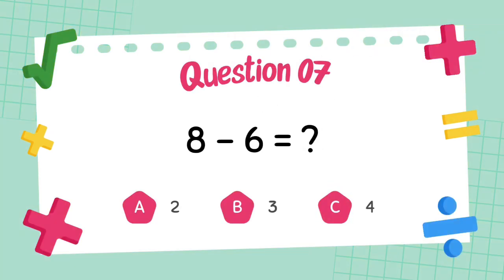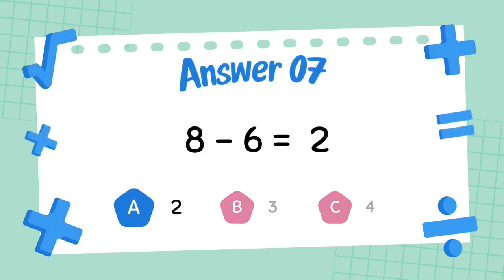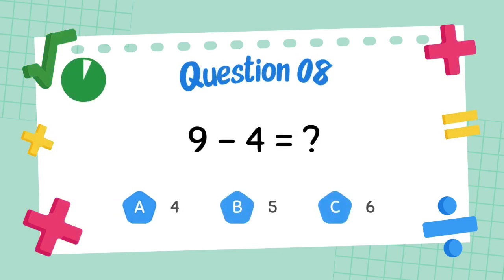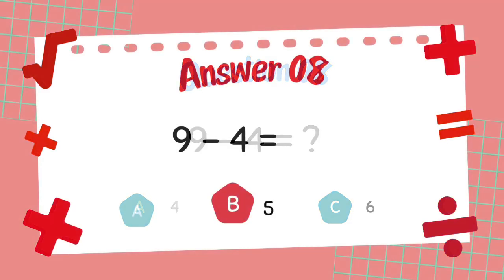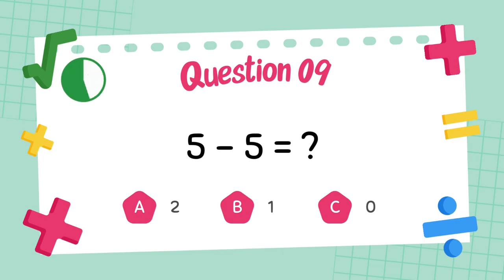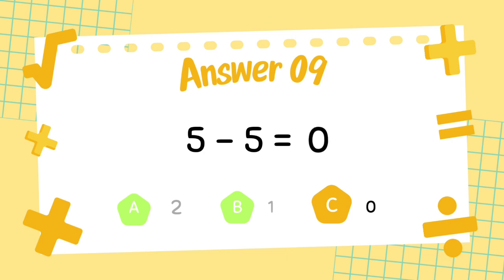What is 8 minus 6? The answer is 2. What is 9 minus 4? The answer is 5. What is 5 minus 5? The answer is 0.